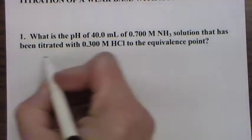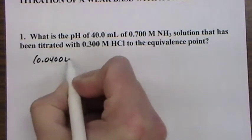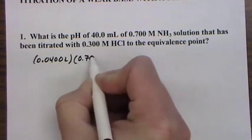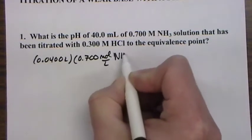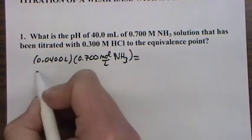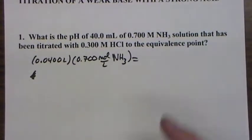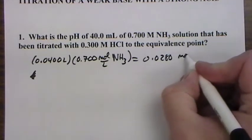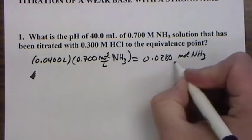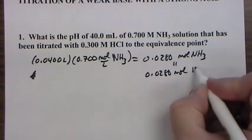So this is going to be, we have to change over to moles, moles of the base, the weak base. And then actually we don't know the volume of the acid yet. We figure out the moles here, it's 0.028 moles of ammonia.